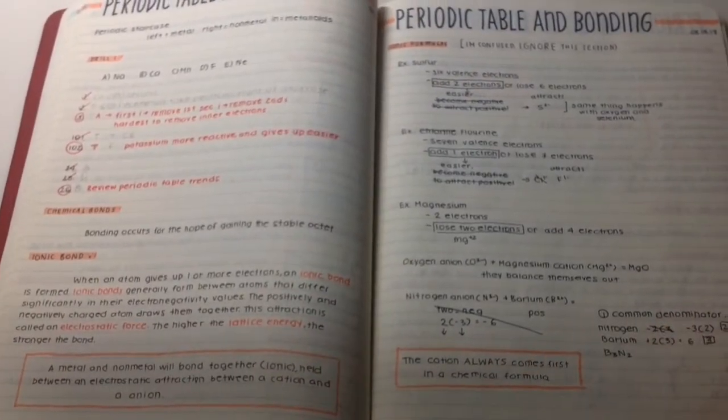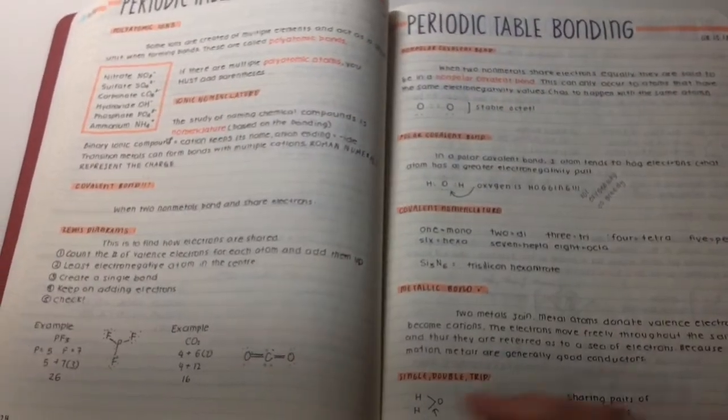My textbook is, I believe, the Princeton Review SAT chemistry book. Before, I only referenced this book and nothing else, and I was so confused.